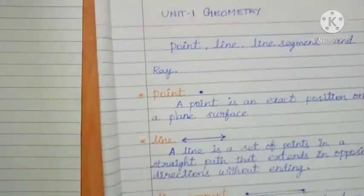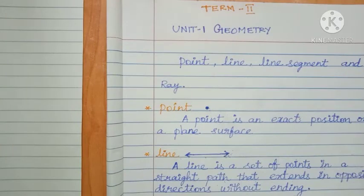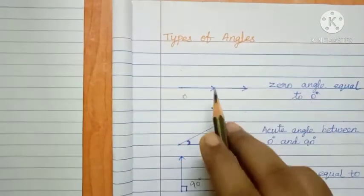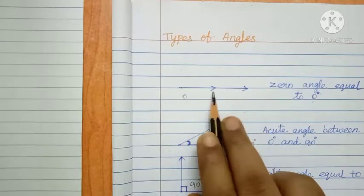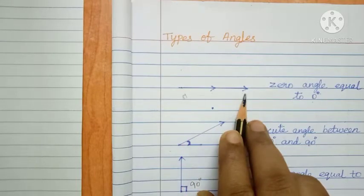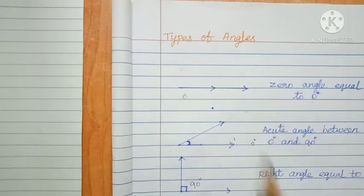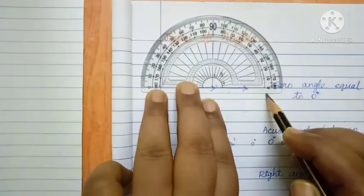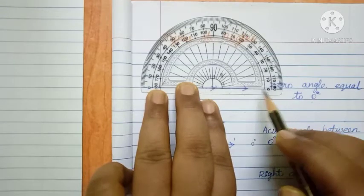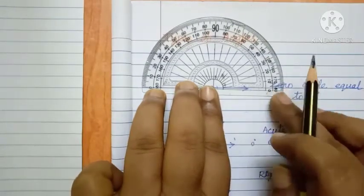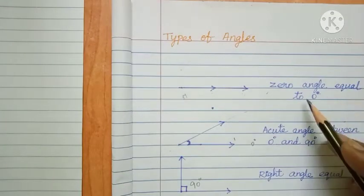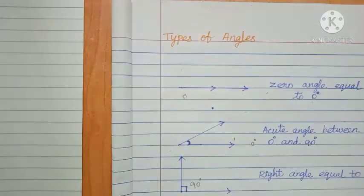Write in your classwork: Term 2, Unit 1, Geometry — Point, Line, Line Segment and Ray. Next topic: types of angles. Draw a straight line with arrow symbols. Using a protractor, fix it here — you get an angle of zero. Zero angle is equal to zero degrees.